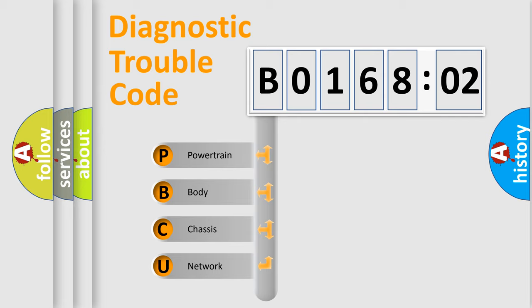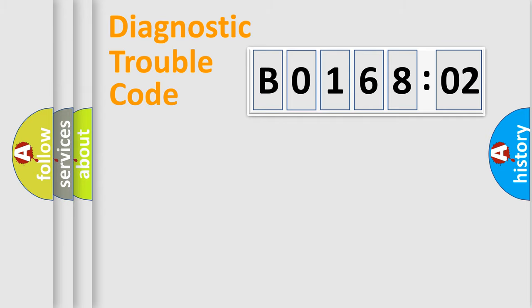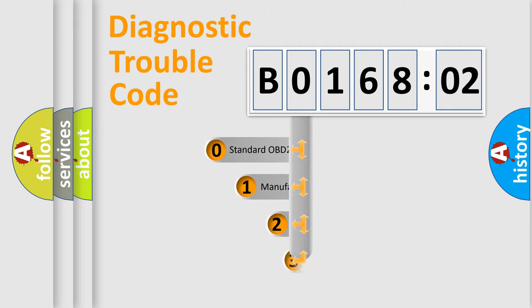We divide the electric system of automobile into the four basic units: Powertrain, body, chassis, network. This distribution is defined in the first character code.